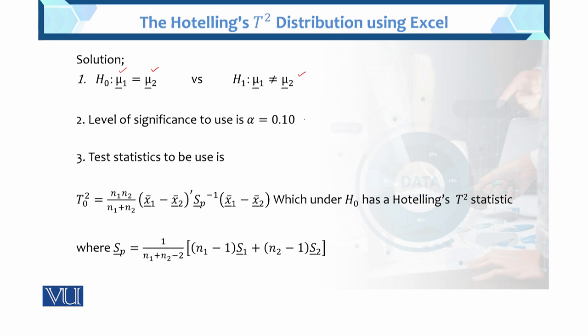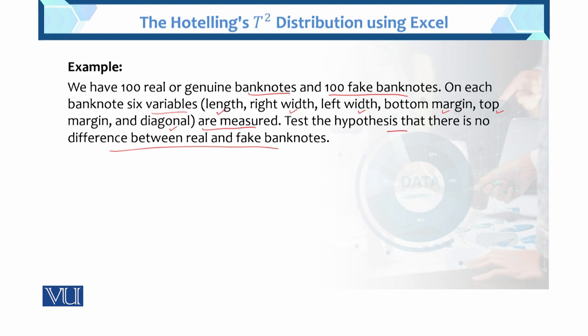We use level of significance alpha = 0.01. The test statistic for the difference between two mean vectors is T-square, and this is its formula. The Hotelling T-square statistic is computed under H₀. The pooled covariance matrix Sp is part of this formula. Now we will perform all these steps in Excel.